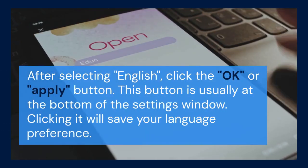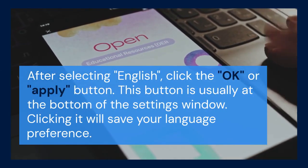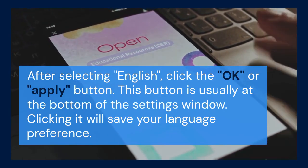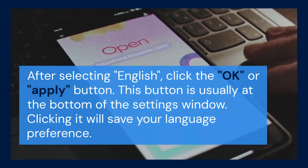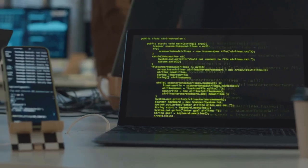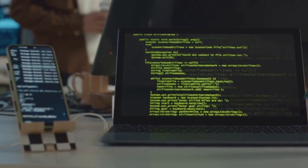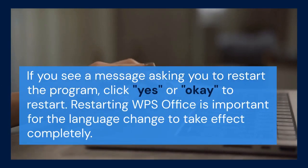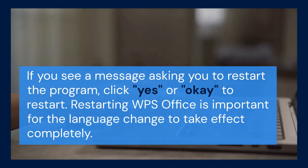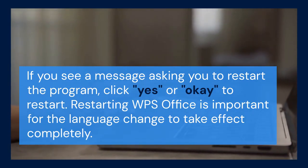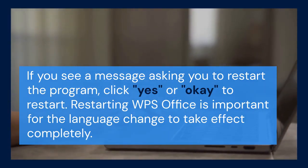After selecting English, click the OK or apply button. This button is usually at the bottom of the settings window. Clicking it will save your language preference. You might be prompted to restart WPS Office. If you see a message asking you to restart the program, click yes or OK to restart. Restarting WPS Office is important for the language change to take effect completely.